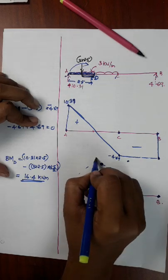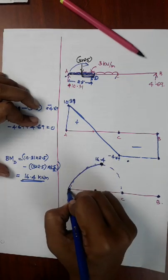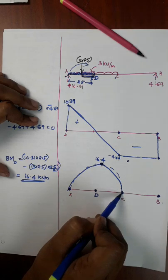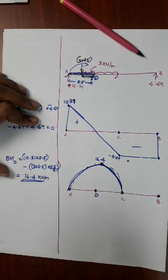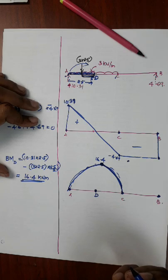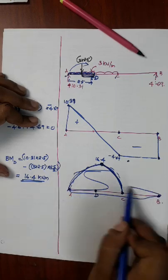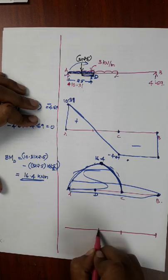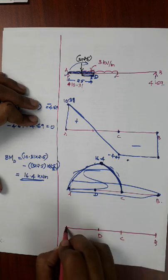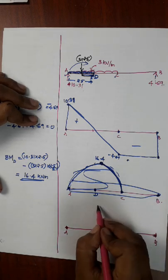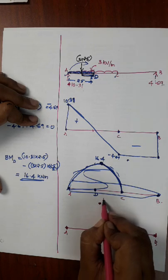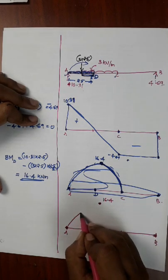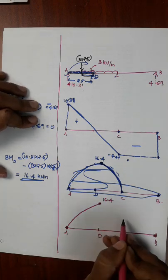The maximum value is 16.4 kNm. The bending moment diagram has a parabolic shape.